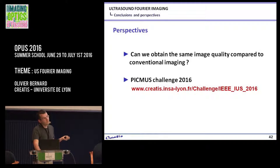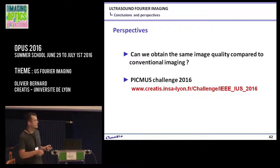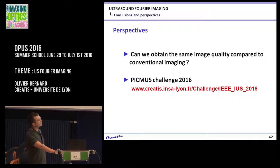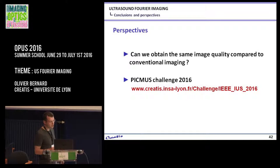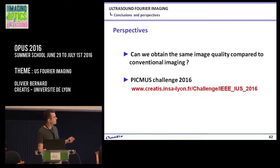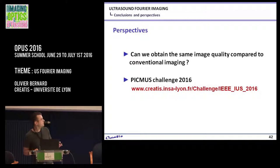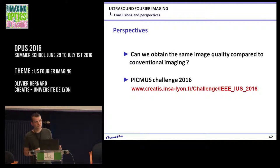The big remaining question is: are we able to reconstruct image quality equivalent to conventional imaging? For that, we organized a challenge that will take place at the next IUS international conference. Right now more than 33 teams participate and try to answer this question. We already have quite good results — we'll see the outcome in September.